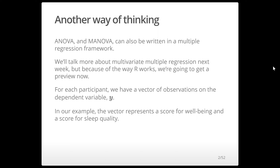For each participant, we have a vector of observations on the dependent variable Y. In the example we looked at in the last set of slides about well-being and sleep quality based on exercise and diet, the vector represents a score for well-being and a score for sleep quality. So our Y is a vector of those two variables.